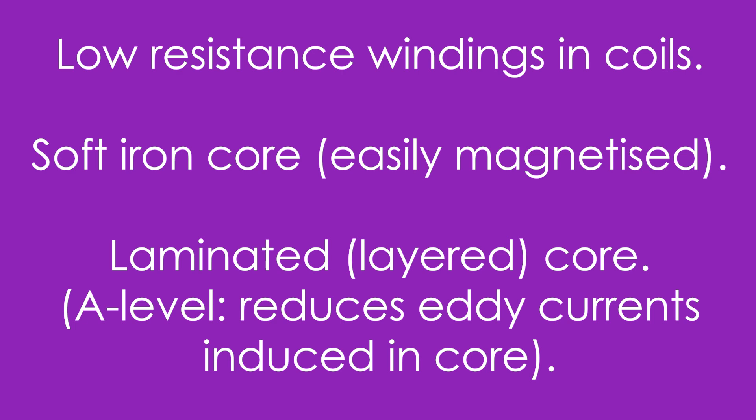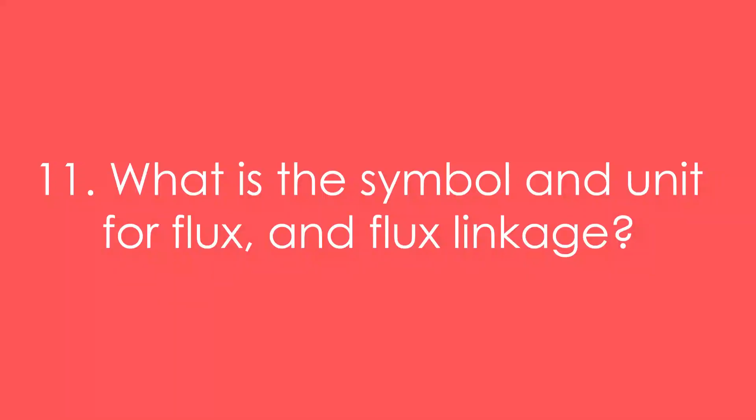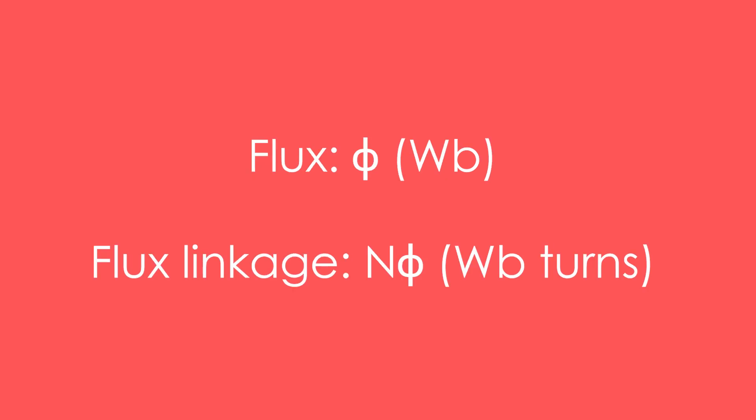That's it for GCSE — we're now just talking A level. Question 11: What is the symbol and unit for flux and flux linkage? Flux is Φ (phi) and the unit is Webers. Flux linkage is NΦ — number of turns times the flux — so that's Weber-turns.